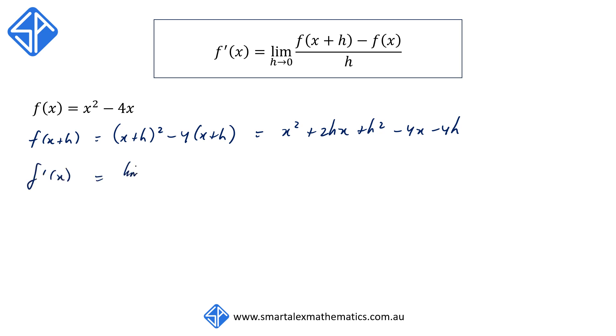Then to find f'(x), we're going to put this equal to the limit as h goes towards 0 of f(x+h), which is this entire expression we've just expanded, x² + 2hx + h² - 4x - 4h. And from it, we're going to subtract f(x), which is x² - 4x.